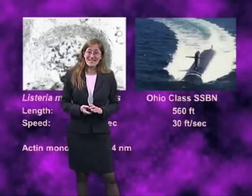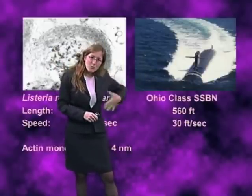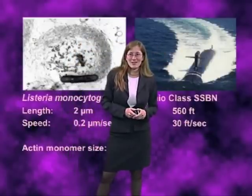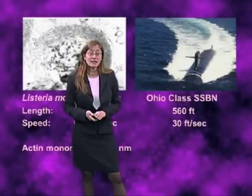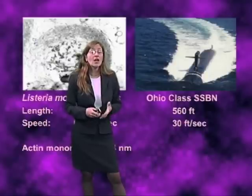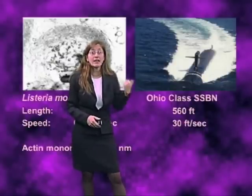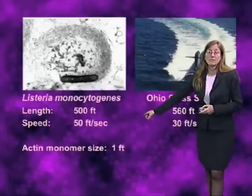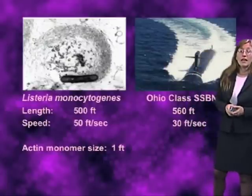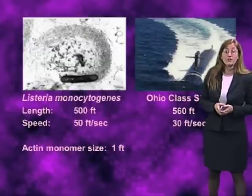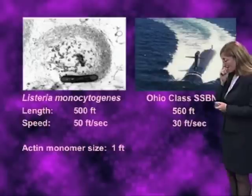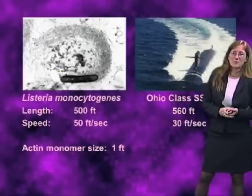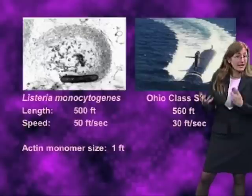As you can see, the structure is essentially identical: a cylinder capped on either end by two hemispheres, moving through a liquid medium and leaving behind a characteristic curved comet tail very similar to the one associated with Listeria. The Ohio-class nuclear submarine is 560 feet in length with a typical cruising speed of about 30 feet per second. Scaling up Listeria — assuming the actin monomer is one foot in size — the Listeria would be 500 feet long with a cruising speed of 50 feet per second, which compares favorably with the speed of the submarine. Filming submarines on the ocean from a satellite would look essentially identical to the movie of Listeria moving inside cells.